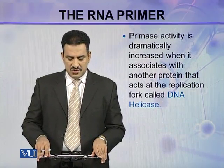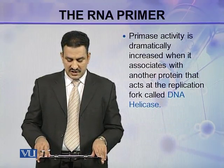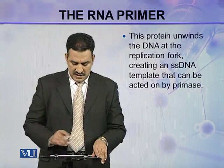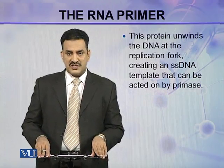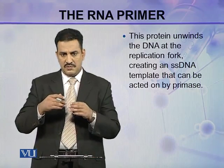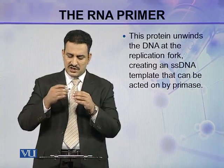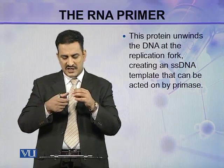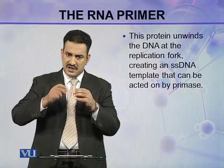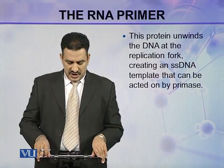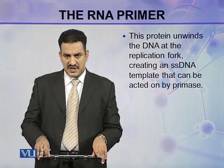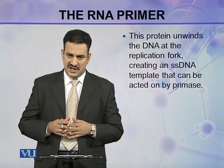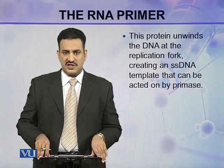Primase activity is dramatically increased when it is associated with another protein that acts at the replication fork — DNA helicase. DNA helicase unwinds the DNA at the replication fork because the DNA molecule is helically coiled. As the fork keeps moving, this winding must be unwound, creating a single-stranded template that can be acted upon by the primers. The presence of DNA helicase thus helps primase synthesize new primers.